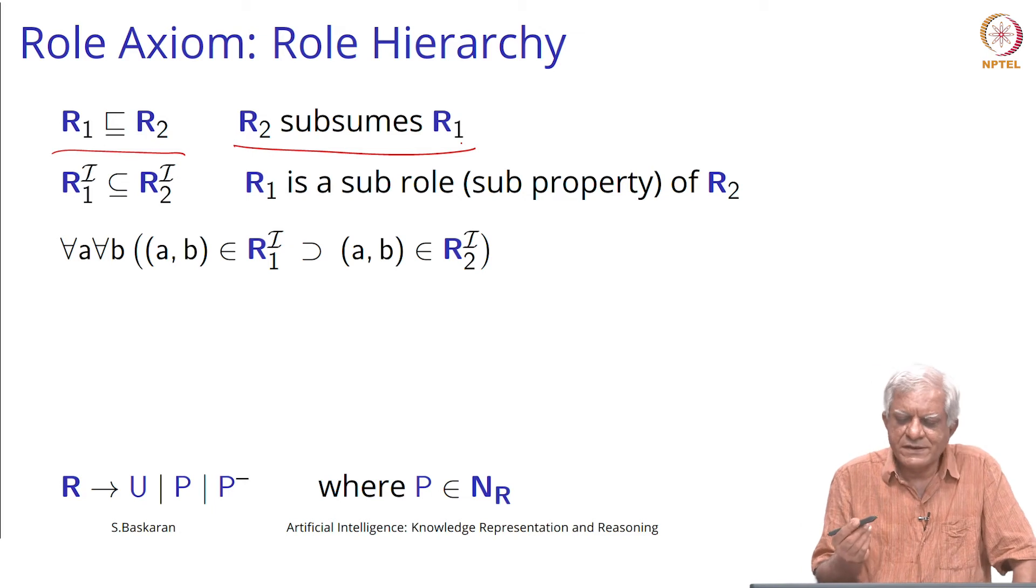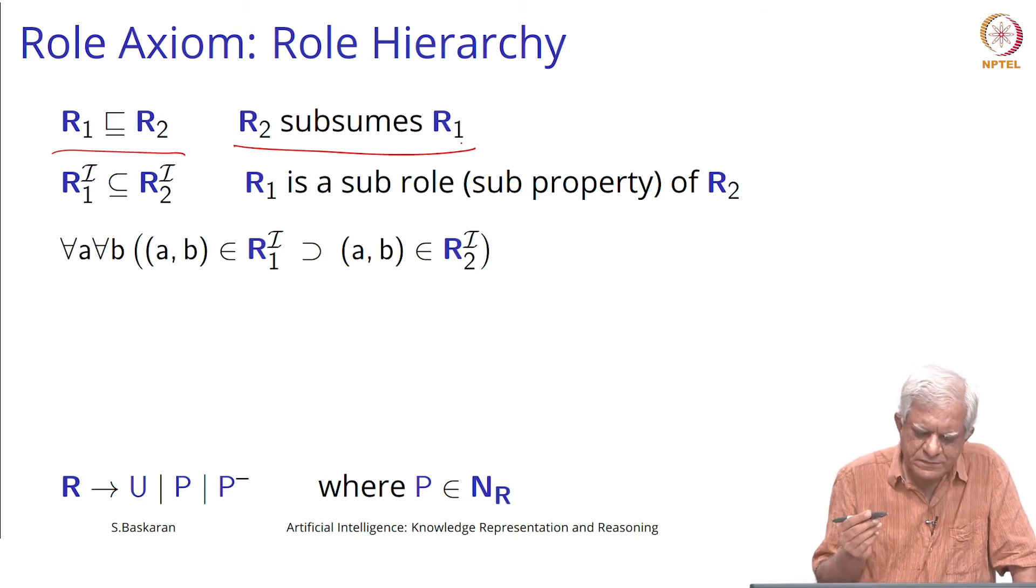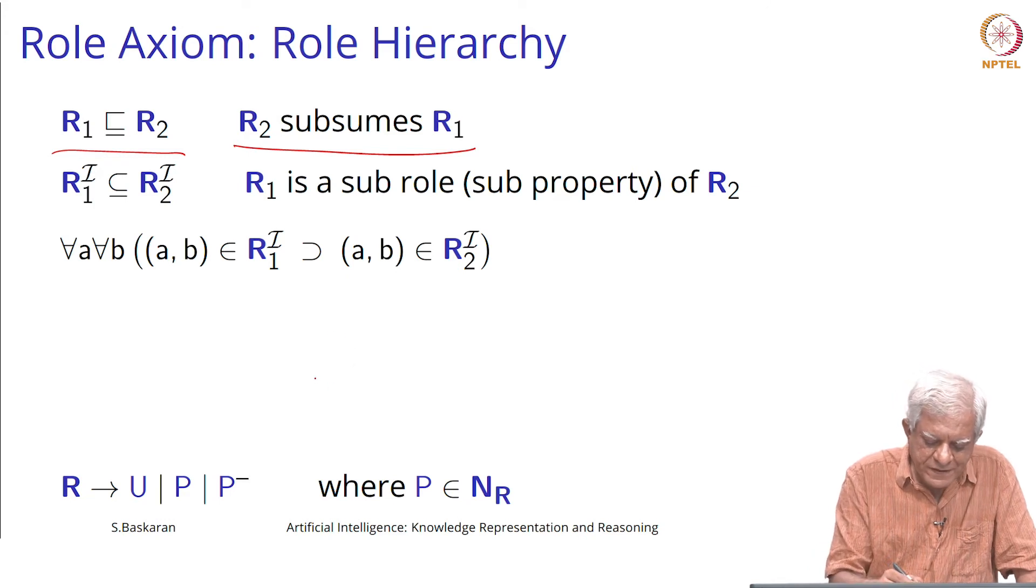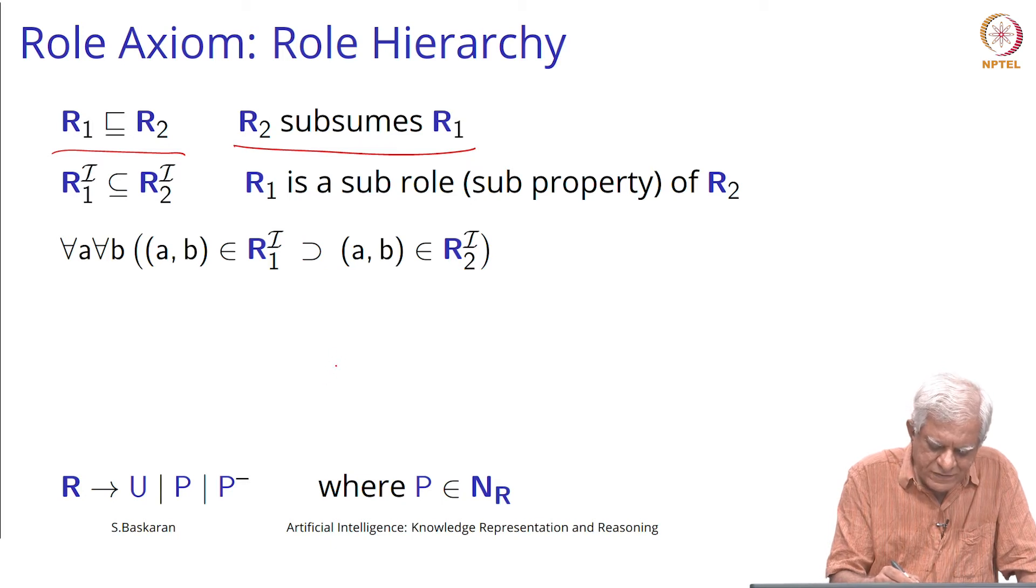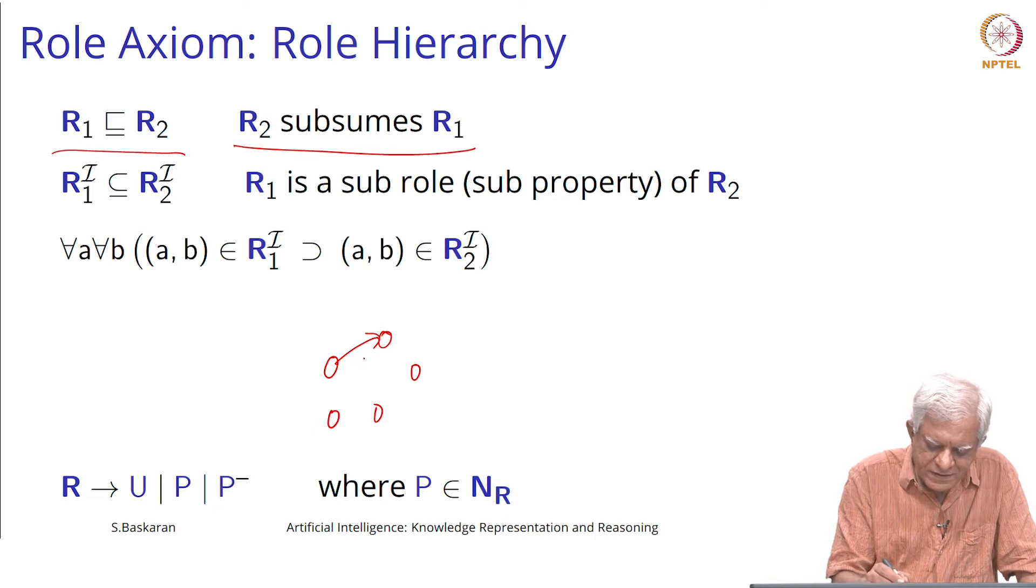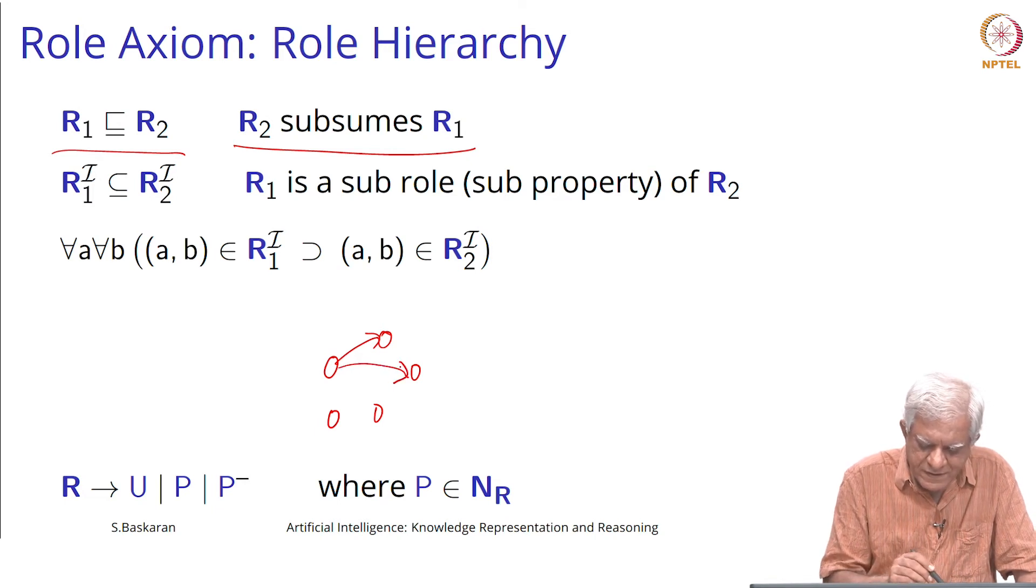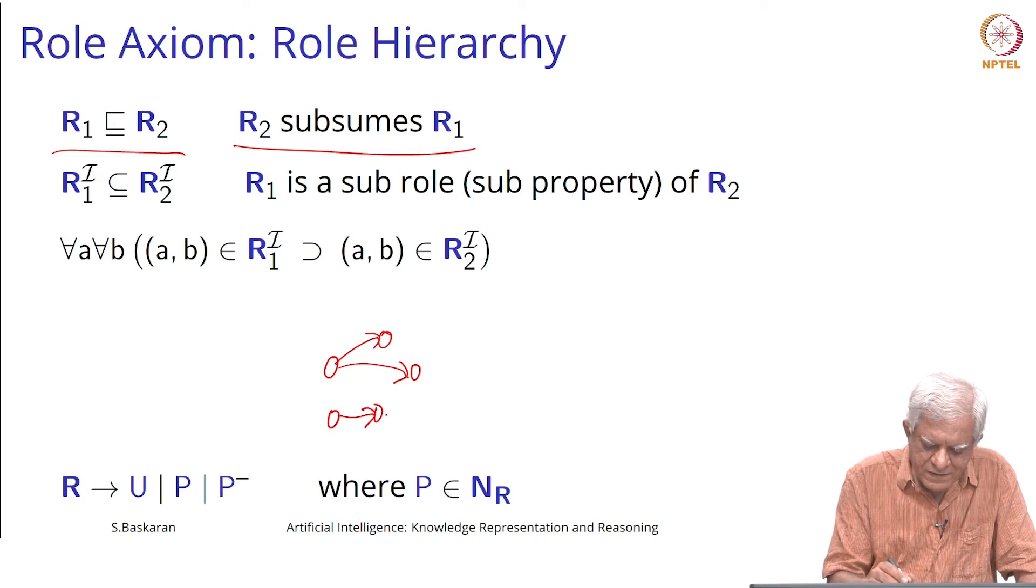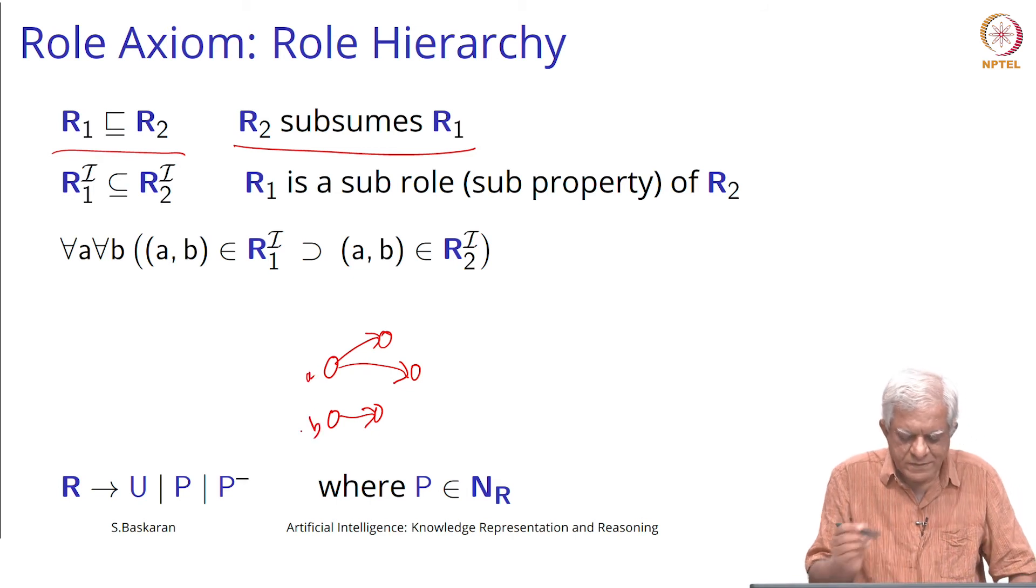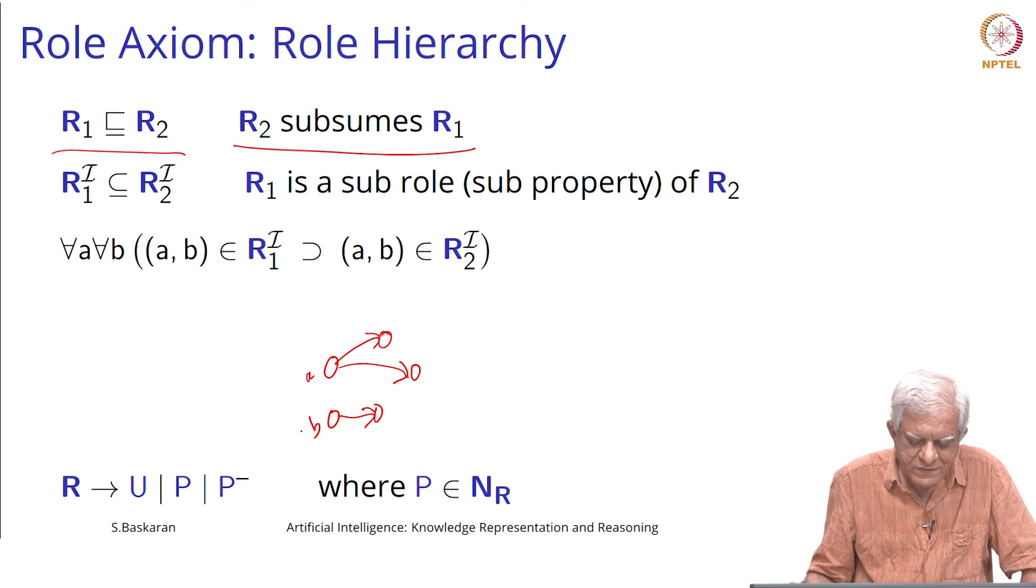This simply says that R1 is subsumed by R2 or R2 subsumes R1. R2 could for example be the sibling relation and R1 could be the brother relation. If we have this set of people and this arrow points to the fact that there is a brother relation between them. A has two brothers and B has one brother. That is a relation.